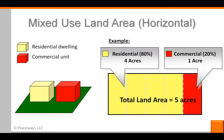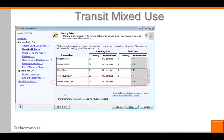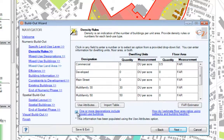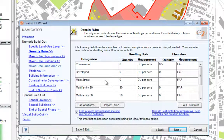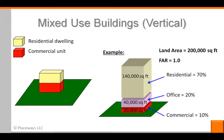Up until now, we only had the option to incorporate mixed-use on a given feature by allocating portions of the property to either residential or non-residential use. This is sometimes called horizontal mixed-use, and in previous videos we set up transit mixed-use to allow for this. In advanced mode, I now have a checkbox to indicate that in some land uses I want to have a mix of uses within buildings themselves. This is sometimes called vertical mixed-use.